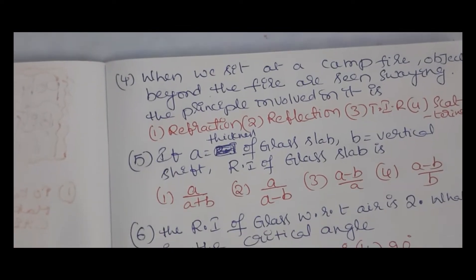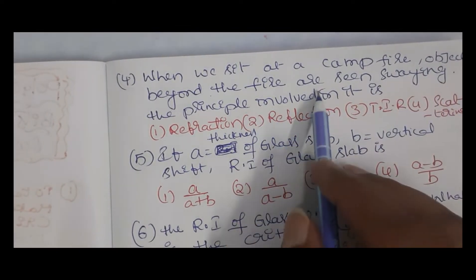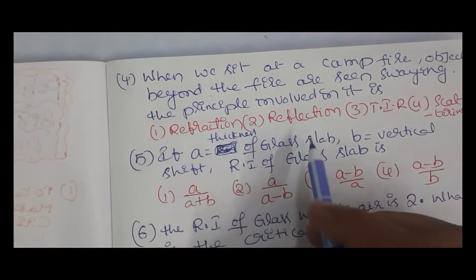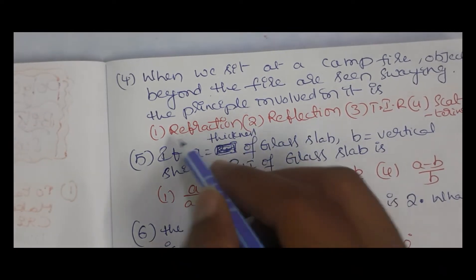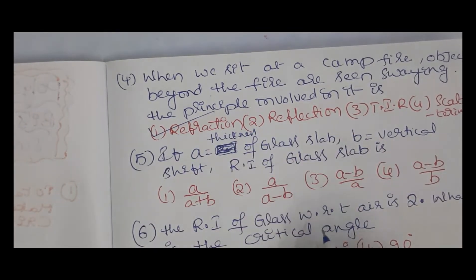Question 4: when we sit at a campfire, objects beyond the fire are seen swaying. The principle involved here is refraction of light.